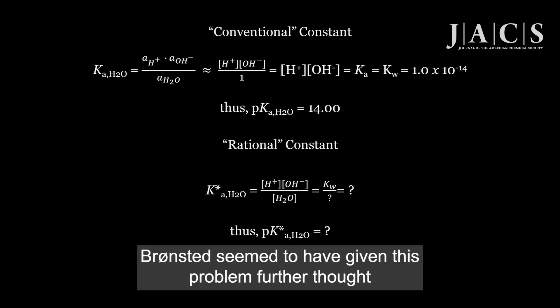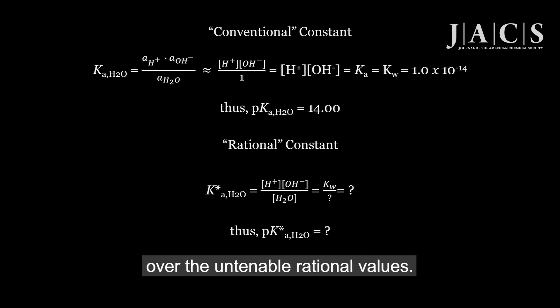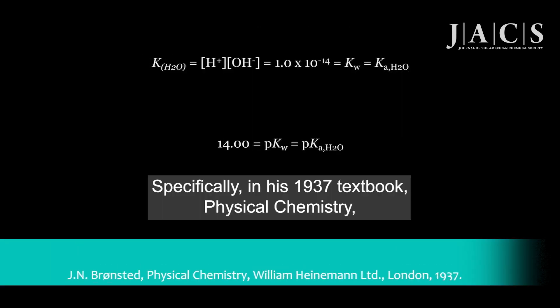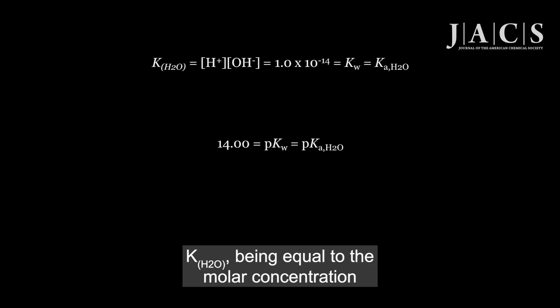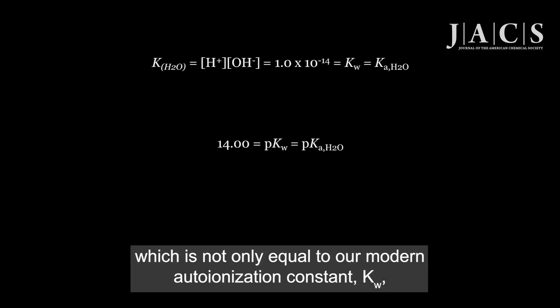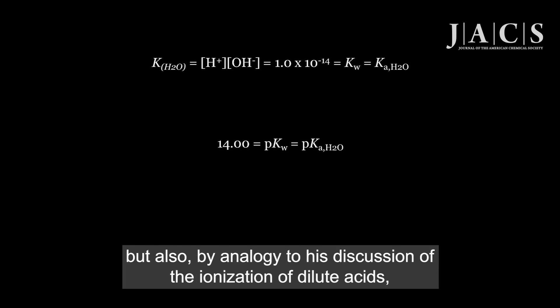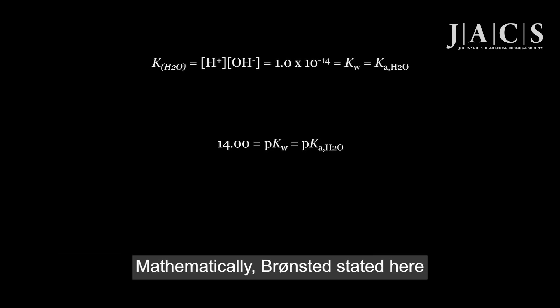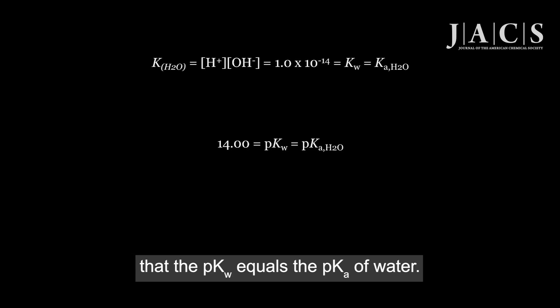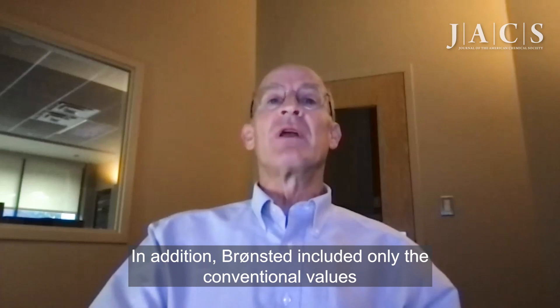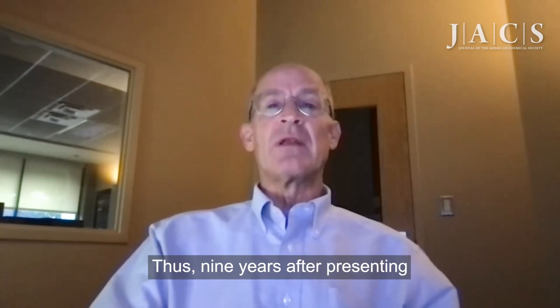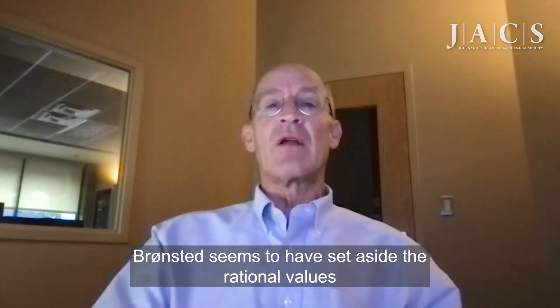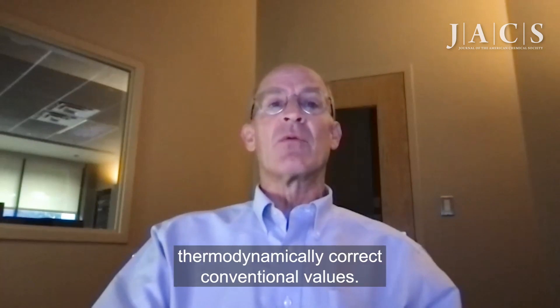Now, by 1937, Bronsted seemed to have given this problem further thought and gave the conventional values precedence over the untenable rational values. Specifically, in his 1937 textbook Physical Chemistry, Bronsted defined an autoprotolysis constant in water, KH2O, being equal to the molar concentration of H+ times the molar concentration of OH−, which is not only equal to our modern autoionization constant Kw, but also, by analogy to his discussion of the ionization of dilute acids, this is equal to the Ka of water. Mathematically, Bronsted stated here that pKw equals the pKa of water. In addition, Bronsted included only the conventional values in a table in this textbook that lists the pKa values of several well-known acids. Thus, nine years after presenting both the rational and conventional values, Bronsted seems to have set aside the rational values in favor of the activity-based thermodynamically correct conventional values.